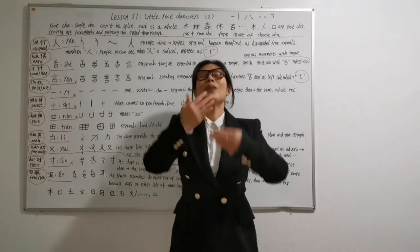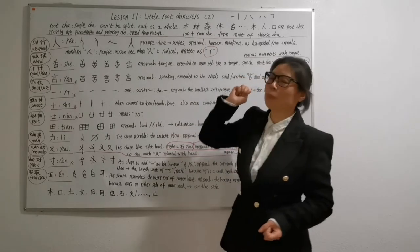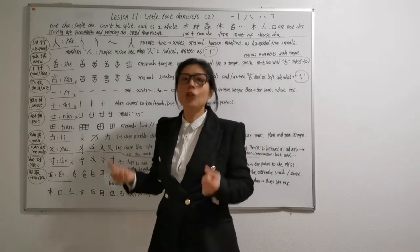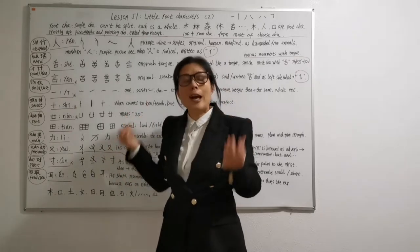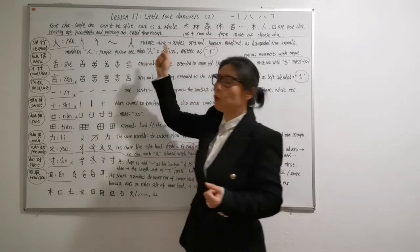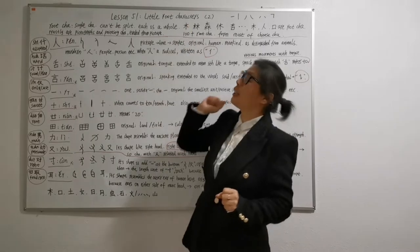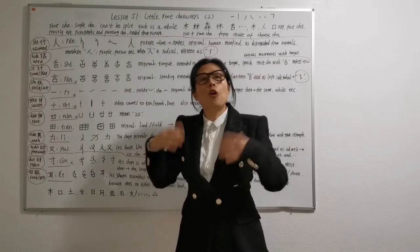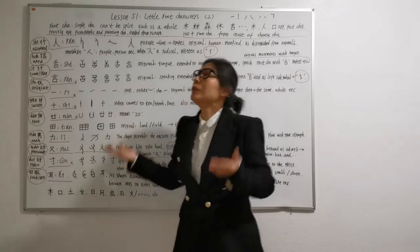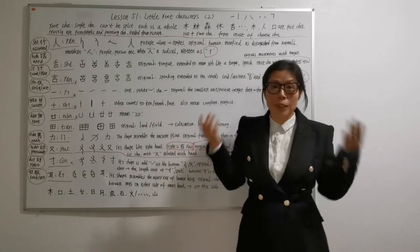Hello everyone, 你好,我是蒋老师. Today we are going to learn lesson 51, Little Root Characters 2. If you have learnt Little Root Characters 1, you should know Root Characters are single characters. They are different from radicals. They can't be split. Each of them is a whole because they evolved from ancient pictures. I have found out more than 100 Little Root Characters, and these little characters formed most of the Chinese characters. It means if you know these 100 plus Little Root Characters, you can write most of the Chinese characters easily.